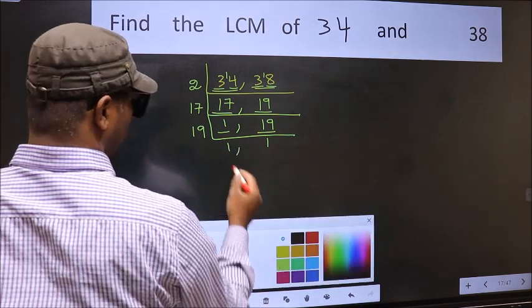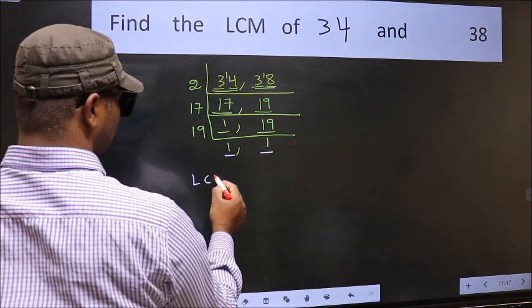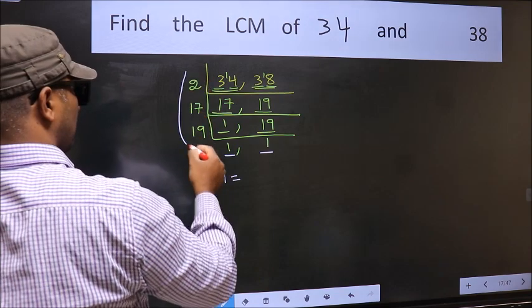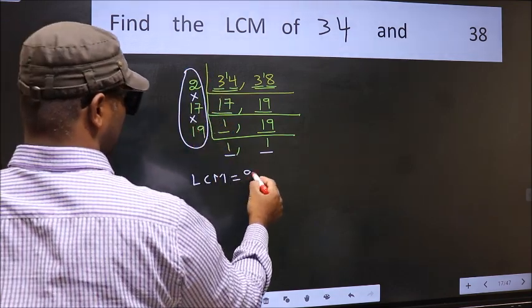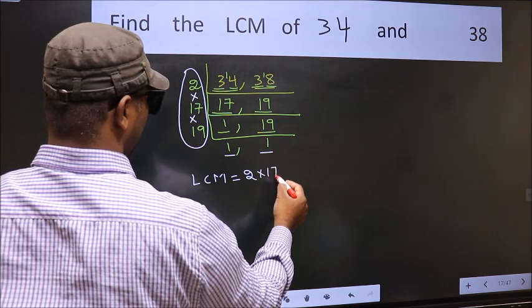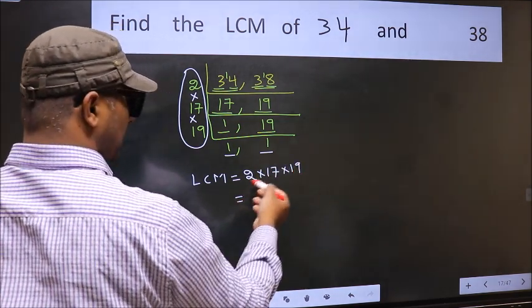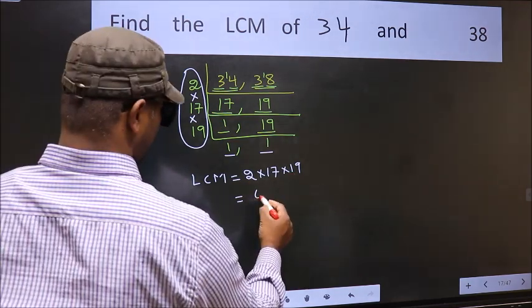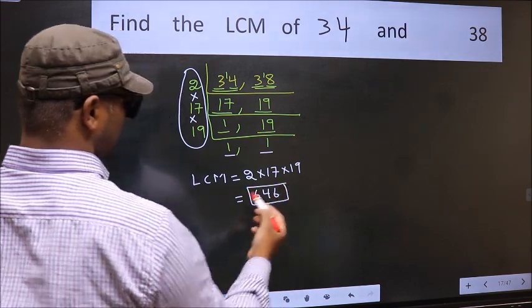So we got 1 in 2, so our LCM is the product of these numbers. When we multiply these numbers, we get 646 is our LCM.